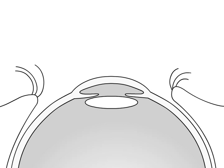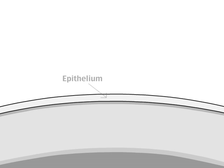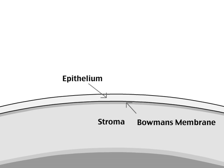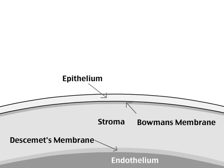First, let's talk about the anatomy of the cornea. The cornea is composed of five layers: the epithelium, Bowman's membrane, stroma, Descemet's membrane, and the endothelium.